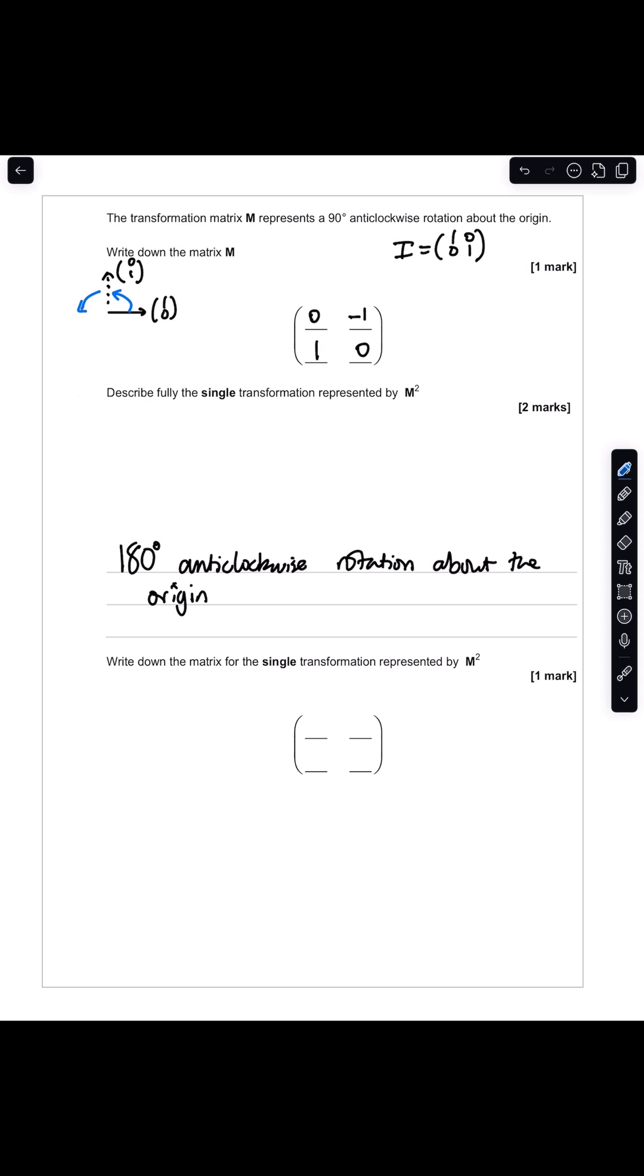Write down the matrix for the single transformation represented by M squared. So if we refer to what we looked at in the first part of this question, this diagram here, now that we're rotating another 90 degrees anti-clockwise.